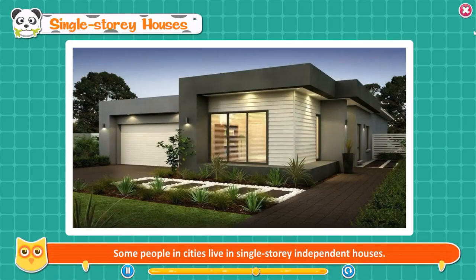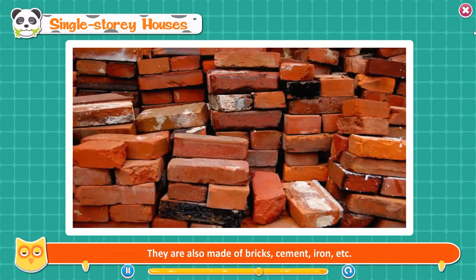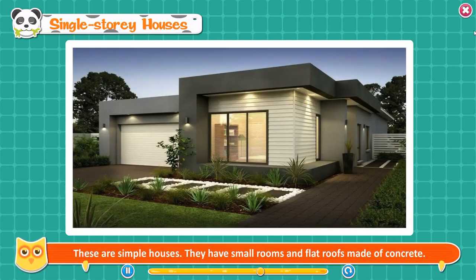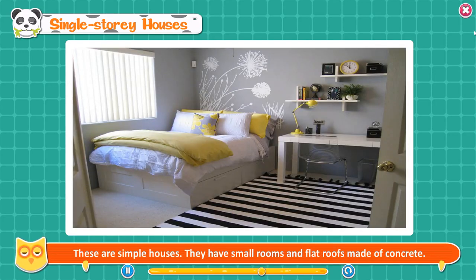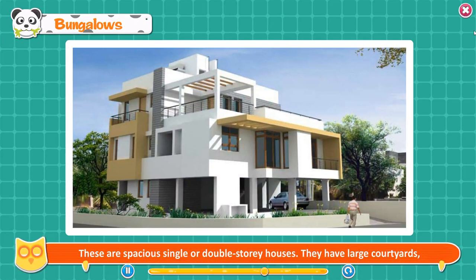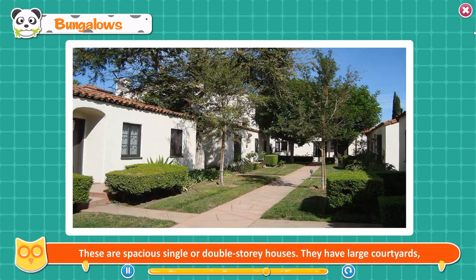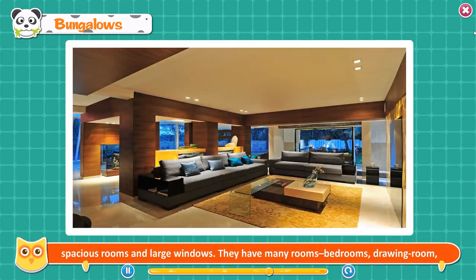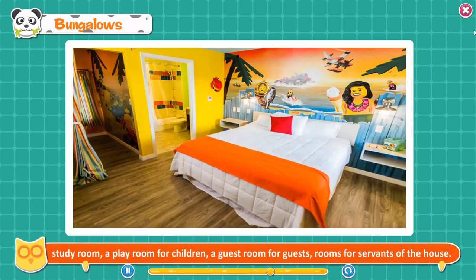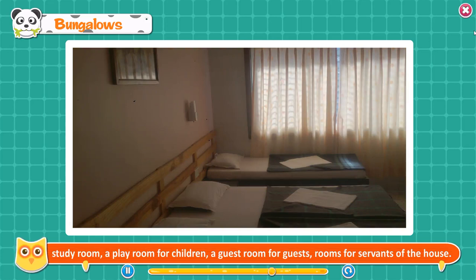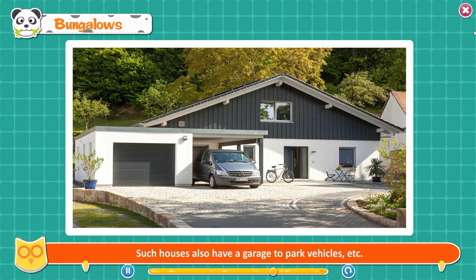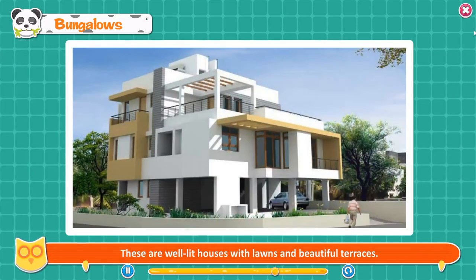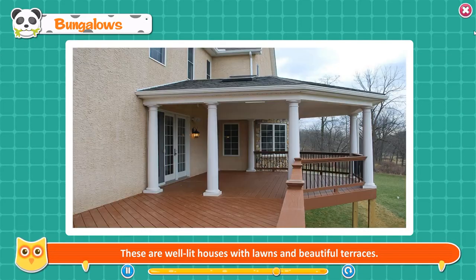Single-story houses. Some people in cities live in single-story, independent houses made of bricks, cement, and iron. They have small rooms and flat roofs made of concrete. Bungalows. These are spacious, single or double-story houses with large courtyards, spacious rooms, and large windows. They have many rooms — bedrooms, drawing room, study room, playroom for children, guest room, and rooms for servants. Such houses also have a garage to park vehicles and are well-lit with lawns and beautiful terraces.